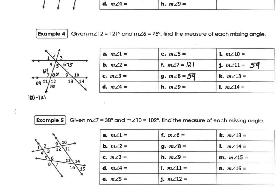Let's look up at the top. If we know that angle six is 75 degrees, what angle is vertical to that? Angles one and six would be vertical angles, so angle one is 75 degrees.